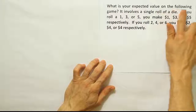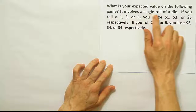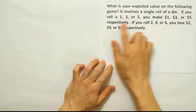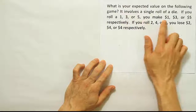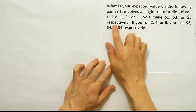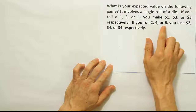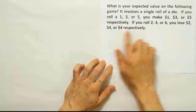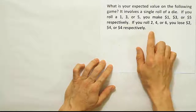What is your expected value on the following game? It involves a single roll of a die. If you roll a 1, 3, or 5, you make 1, 3, or 5 dollars respectively. If you roll 2, 4, or 6, you lose 2, 4, or 4 dollars respectively.